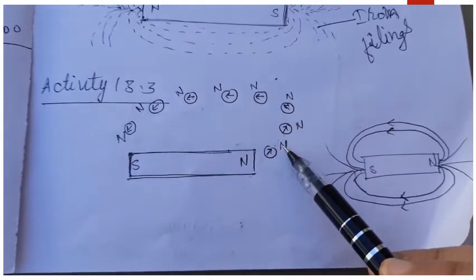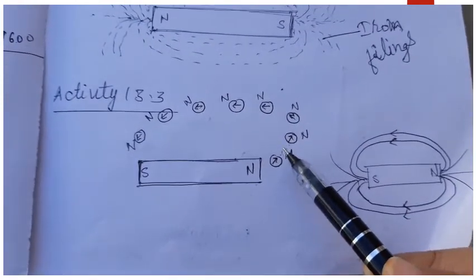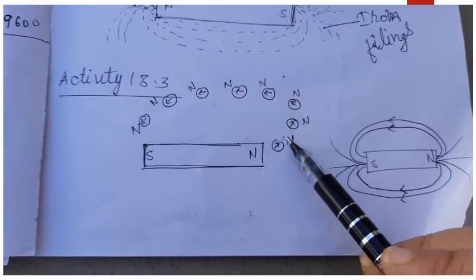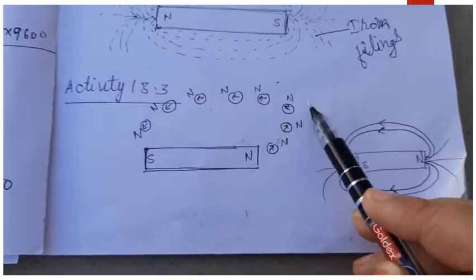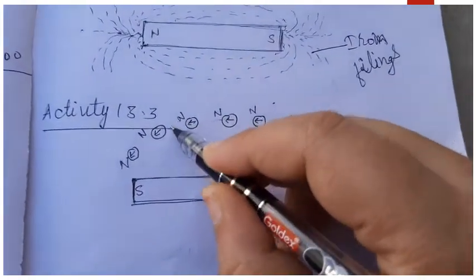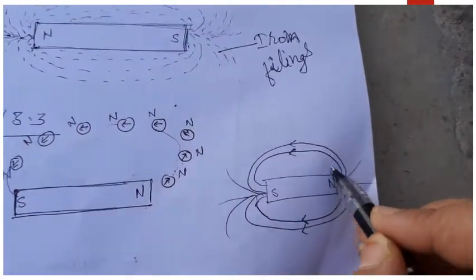In this way, again and again, you keep marking the direction of pointer and keep placing the compass, keep making the next position of compass on that point itself. And when you join all these dots which you have made, you see this type of pattern.